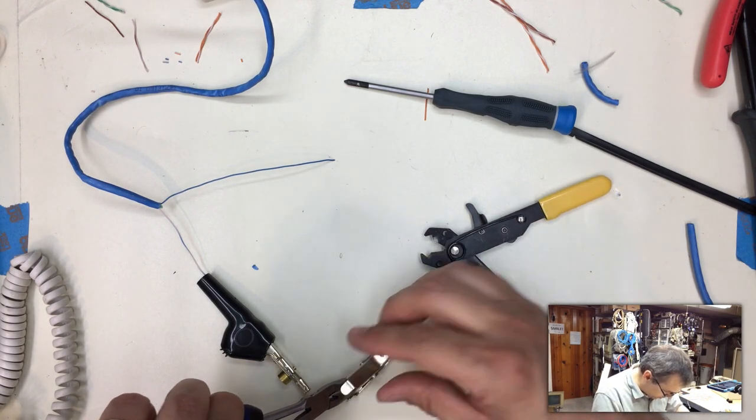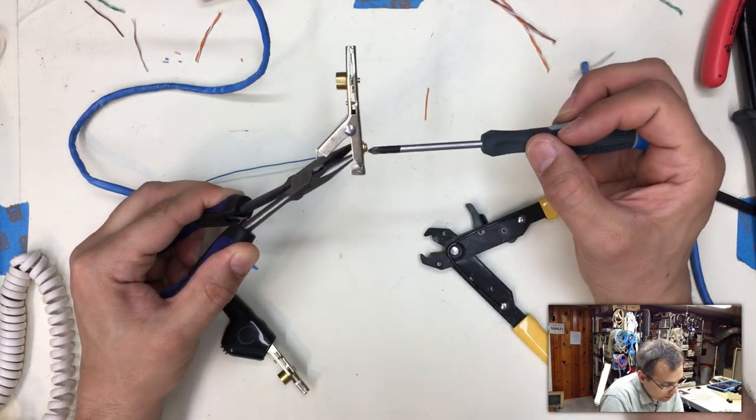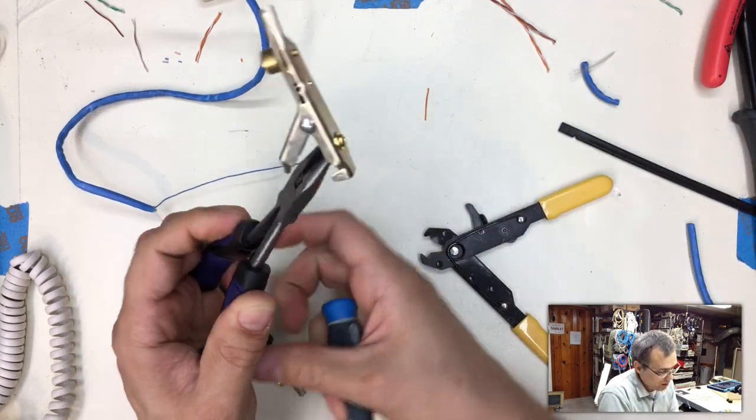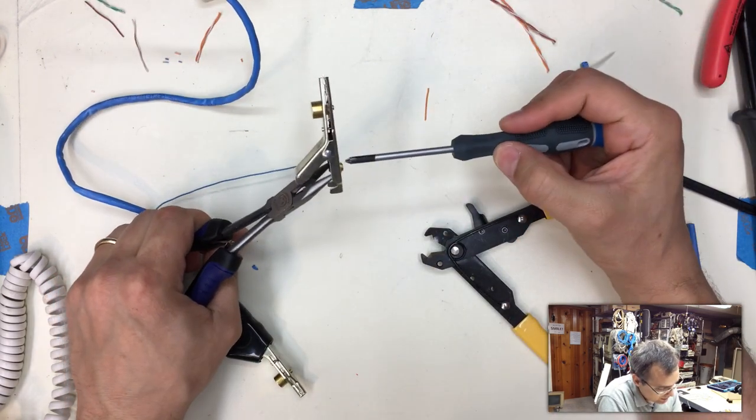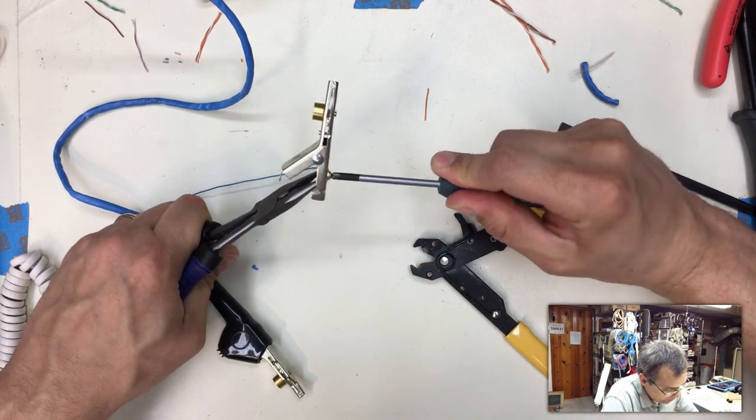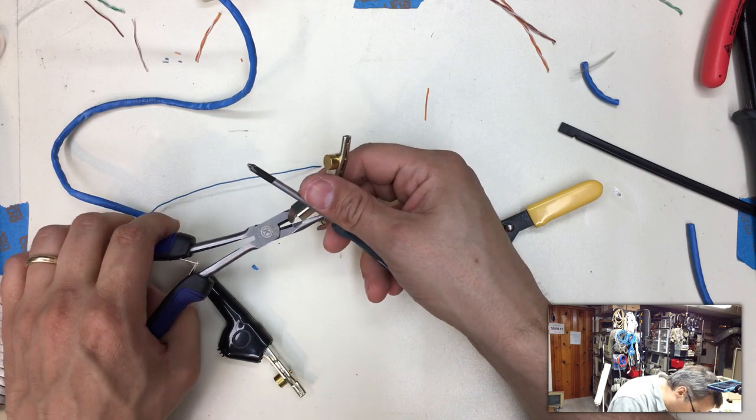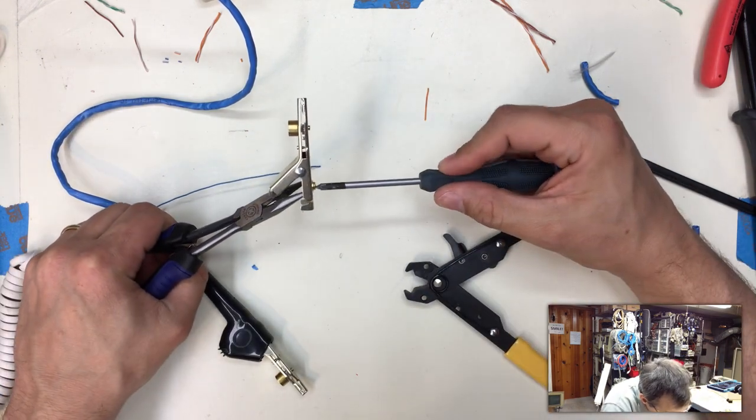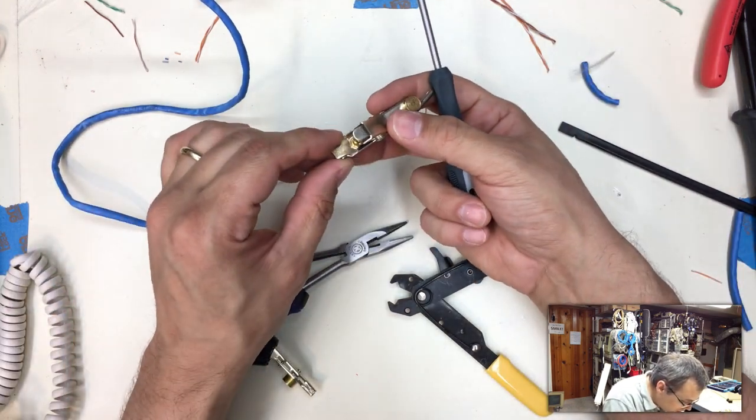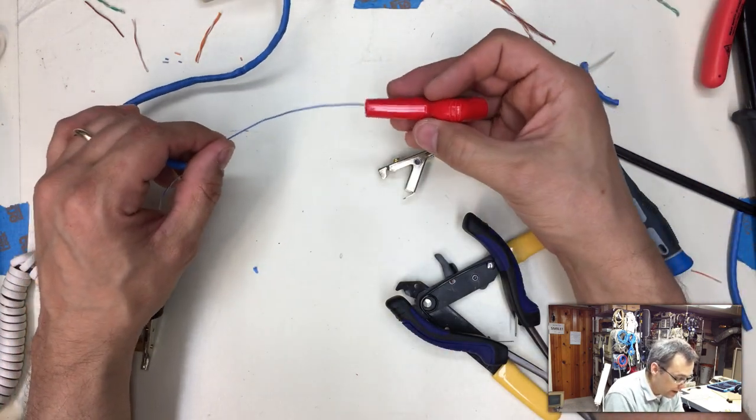And the red side, an easy way to remember this is red is ring. So that side on standard telco, it's green is tip and red is ring. So since we did the ring on that side as the solid color blue, we want to use the ring on this side as the solid color blue as well. Red is ring. R-R. Red ring.